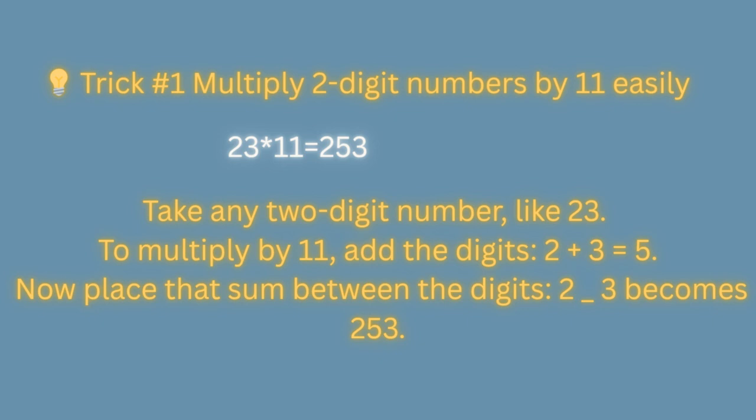Trick number 1: Multiply 2-digit numbers by 11 easily. Take any 2-digit number, like 23, to multiply by 11. Add the digits, 2 plus 3 which is equal to 5. Now place that sum between the digits 2 and 3, answer is 253.